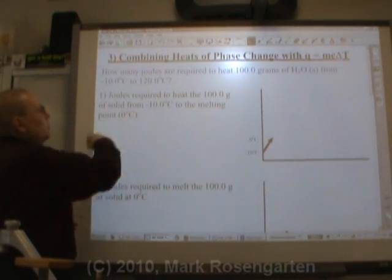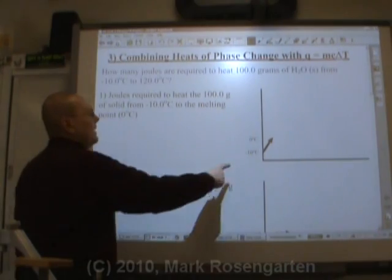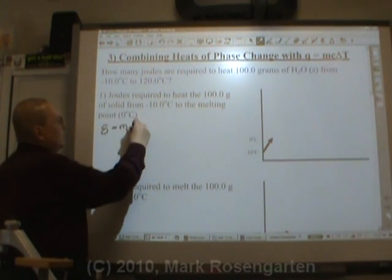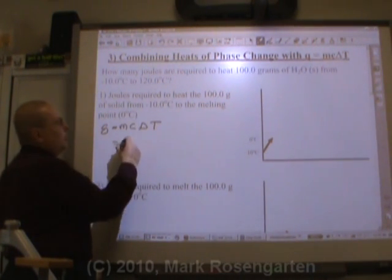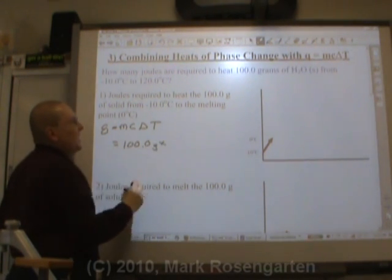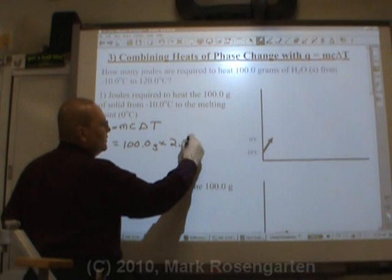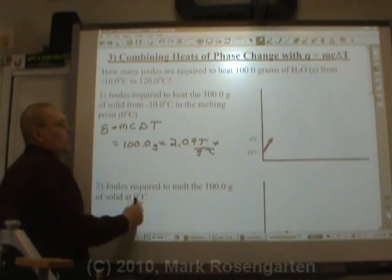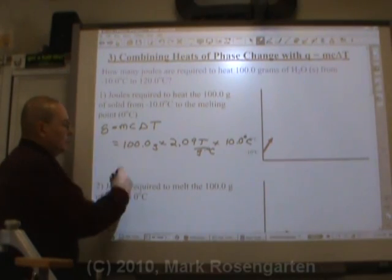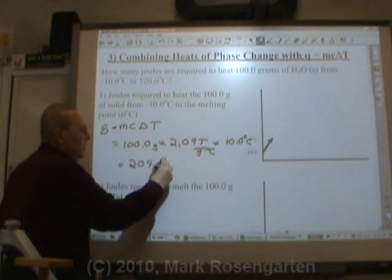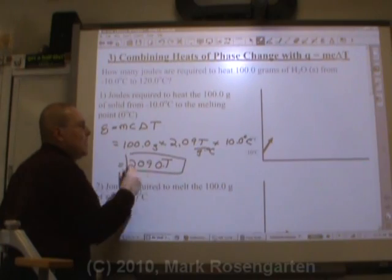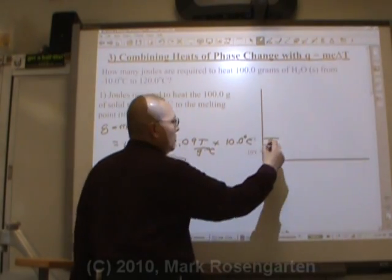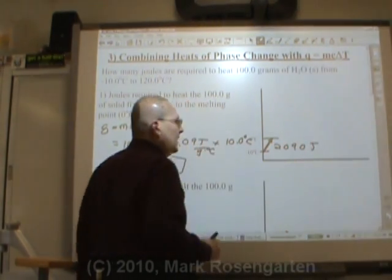Step number one, how many joules are required to heat the 100 grams of solid from minus 10 up to the melting point of zero degrees Celsius? So for this, we use Q equals MC delta T. Now the mass of water is 100.0 grams. The specific heat of ice is 2.09 joules per gram degrees Celsius times the temperature change of 10.0 degrees Celsius. And that comes out to 2,090 joules. Now that's the amount of joules it takes just to heat it from the starting temperature to the melting point. 2,090 joules to get that job done.